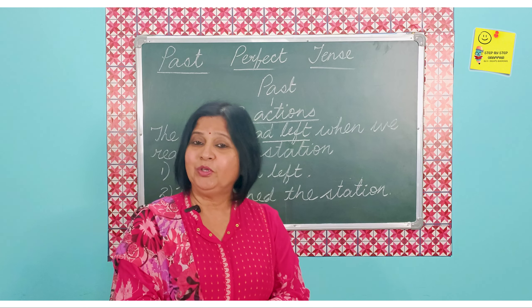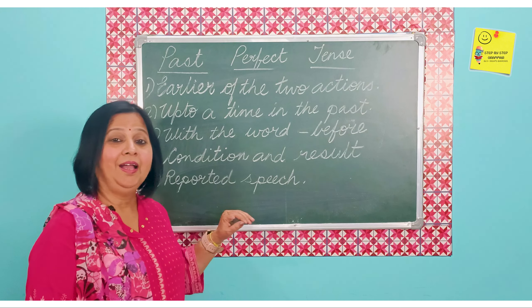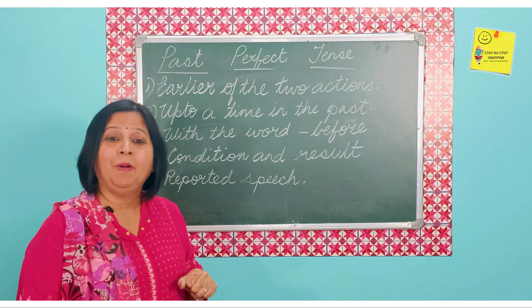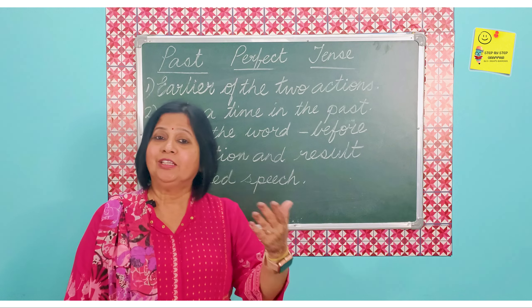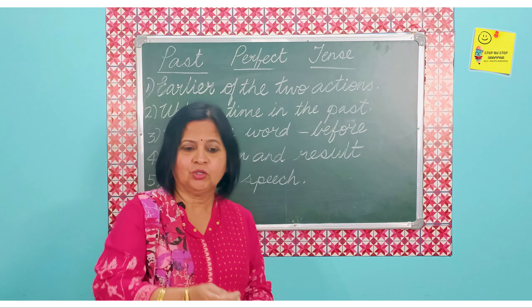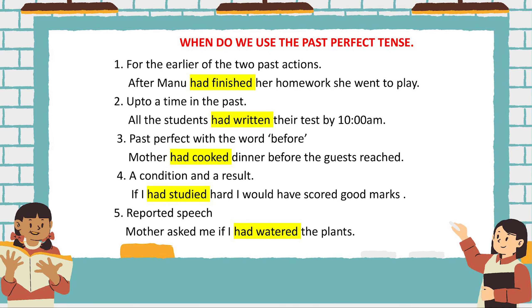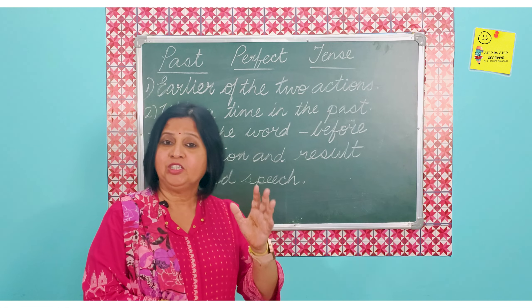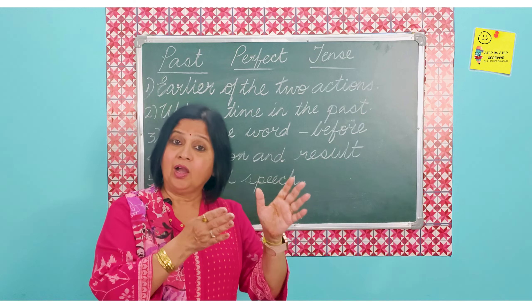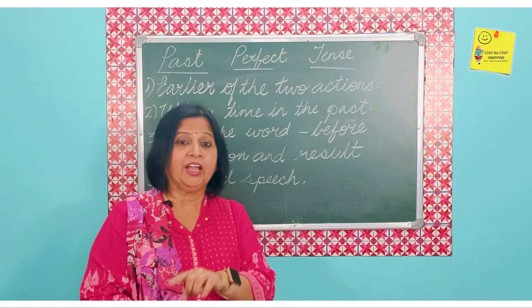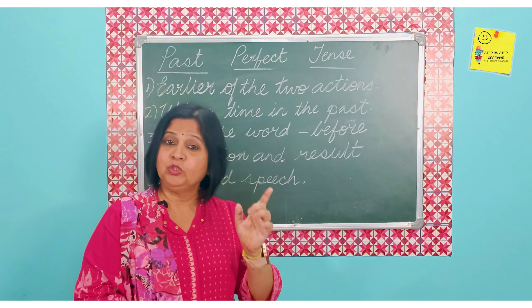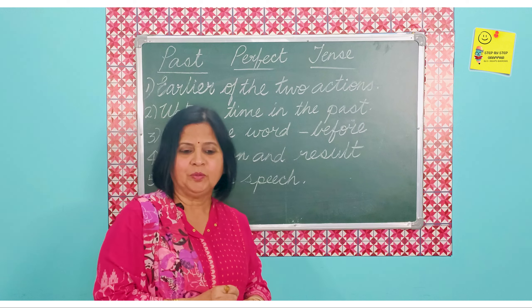Let us look at some situations when we use the past perfect tense. The first one: the earlier of the two actions. For example, 'the train had left when we reached the station,' or 'after Manu had finished her homework, she went to play.' Two actions took place; the completion of the work came first, so we use the past perfect. We can also reverse the order: 'she went to play after she had finished her work,' but the order of events will not change.